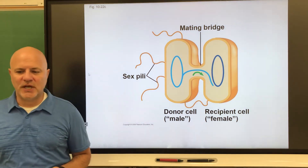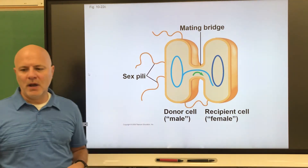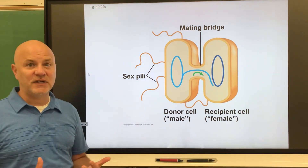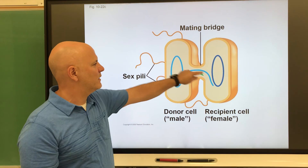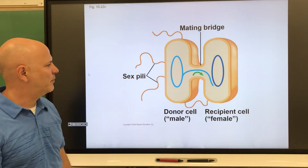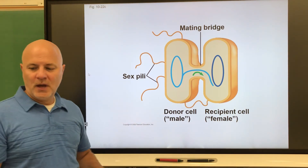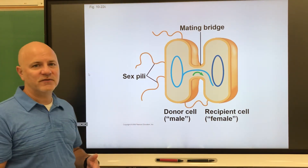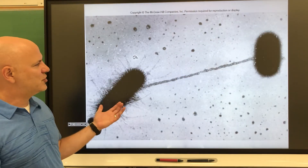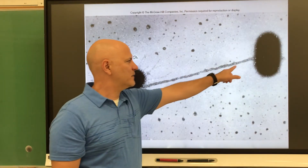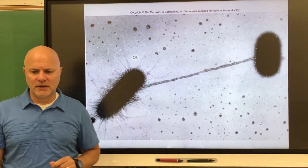Next is conjugation, a form of gene transfer in prokaryotes. Here the bacteria exchange genetic material using what is known as a sex pilus. This transfers genetic material from one cell to the next, which can create a new combination of genes, or they could transfer a plasmid this way. As you can see in the example shown, these bacteria don't look anything like each other.